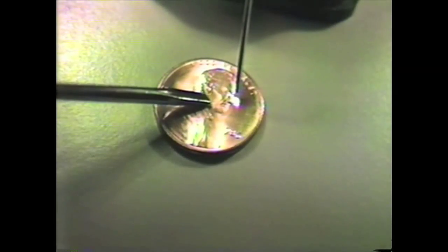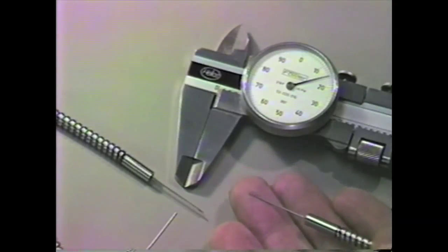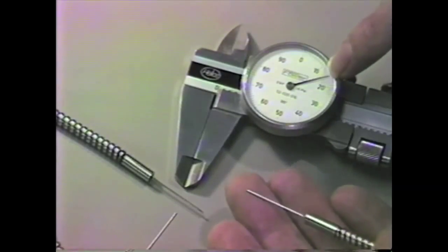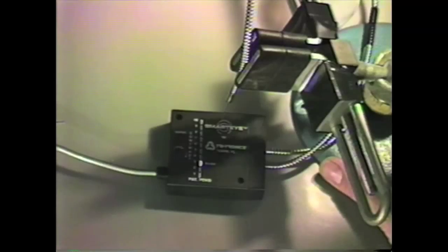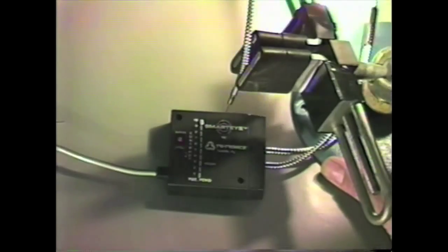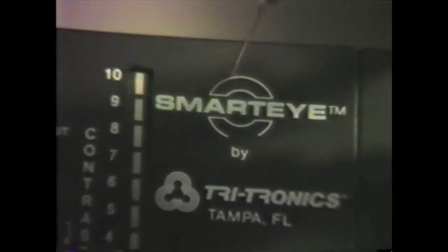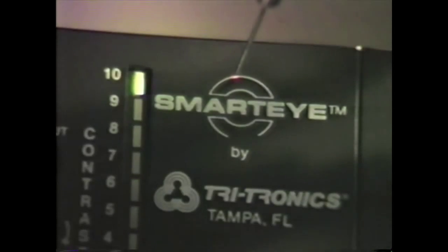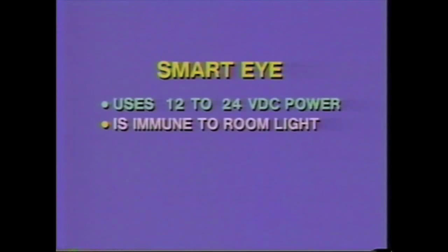The sensor's incredible sensitivity allows it to operate down tiny fiber optic light guides with diameters as small as fifteen thousandths of an inch. These tiny beam widths mean you can now accurately detect a part's location to within ten thousandths of an inch or less. Smart Eye uses low voltage DC power, and its light source is pulse modulated for good ambient light immunity.